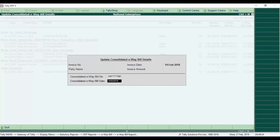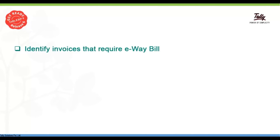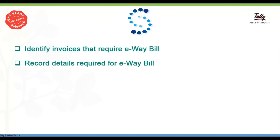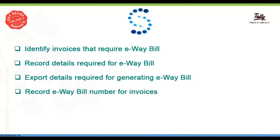If you have a double A-Bill number, you can enter the number. If you have Tally, you can type the A-Bill and identify the A-Bill. The 2nd point is to record the A-Bill re-eals. The 3rd point is to export the A-Bill. The 4th point is to record the A-Bill in the third step. This is Tally and E-CA.